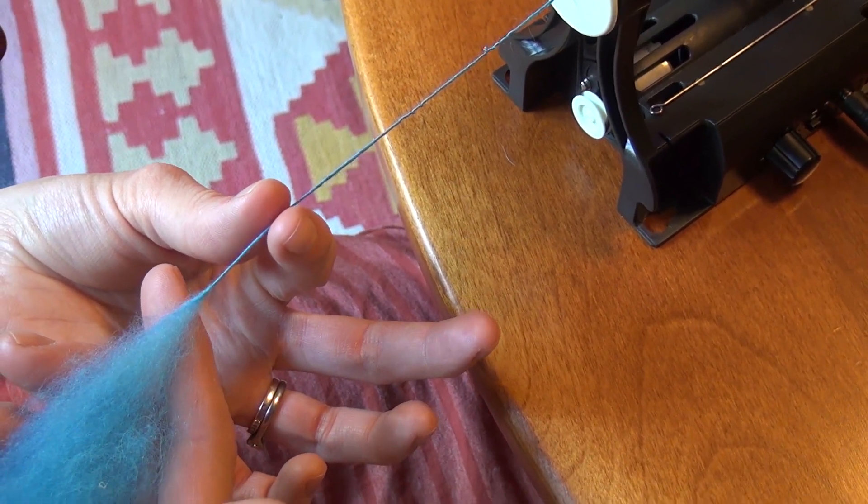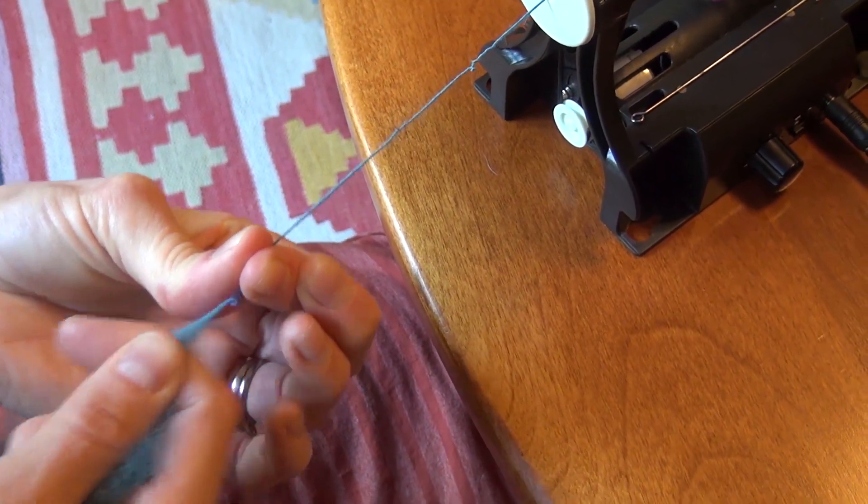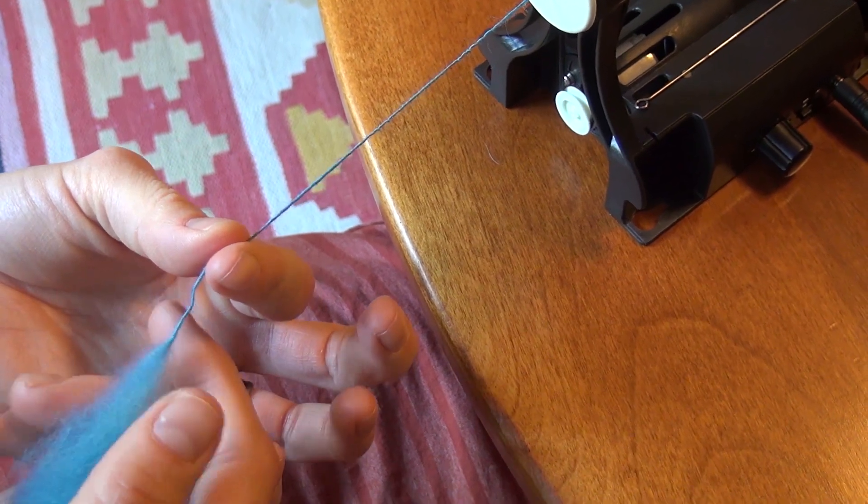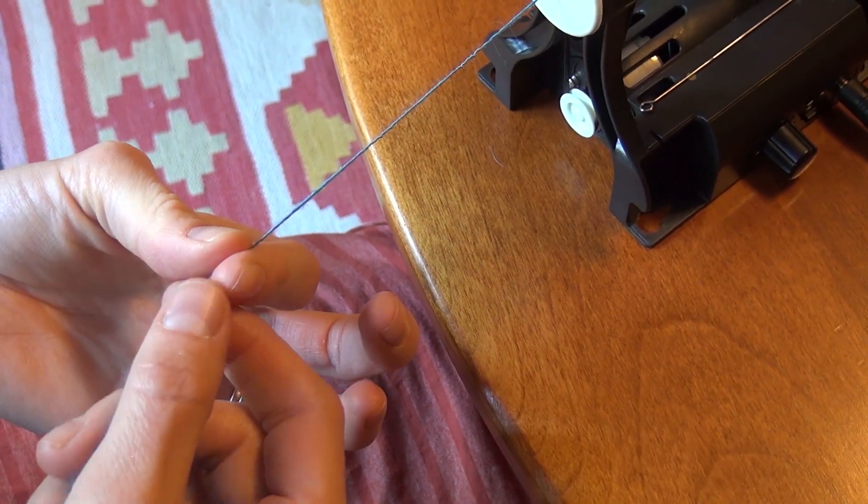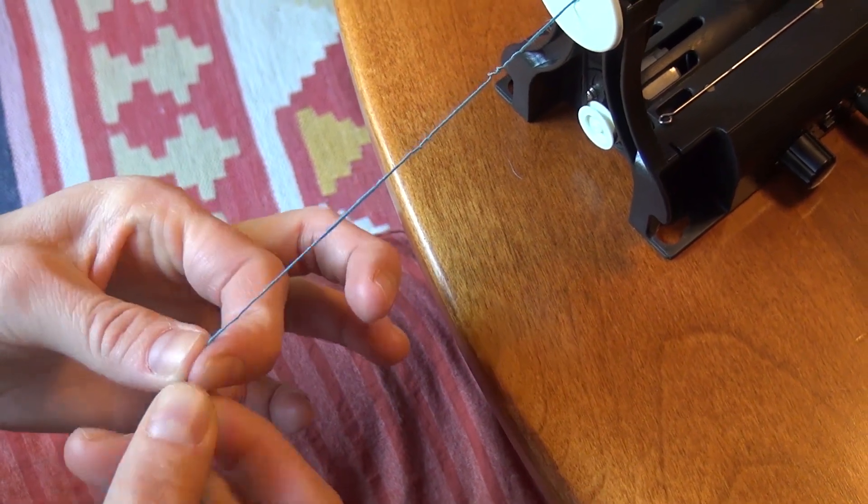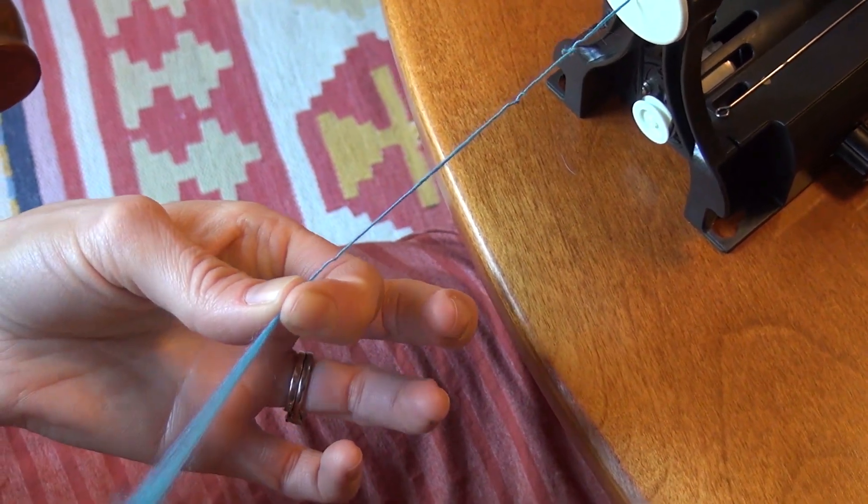Here is an example of what happens if you let the twist travel up into your fiber. If this happens just a little you might be able to fix it, but if not you'll have to stop your spinning wheel and either draft out this fiber or remove the twisted fiber.